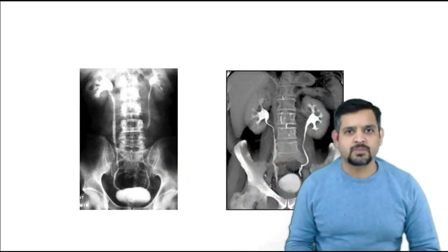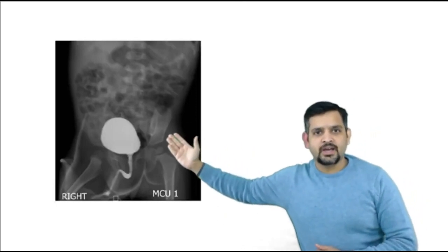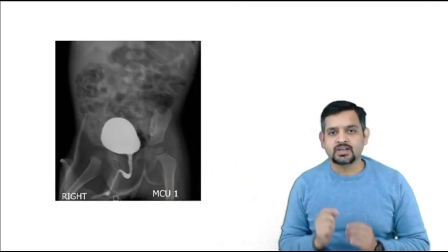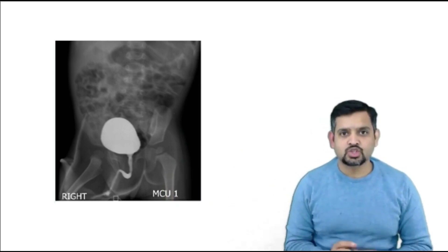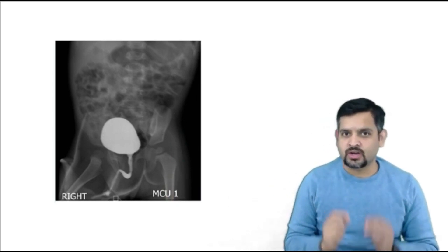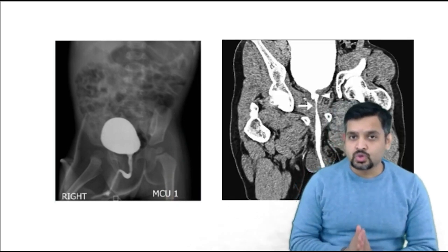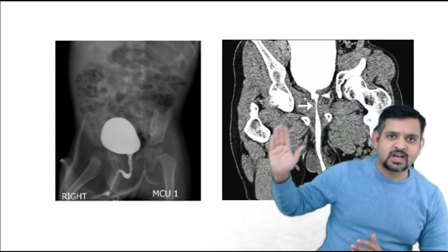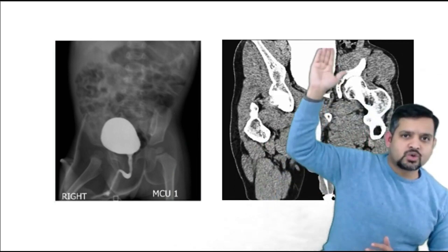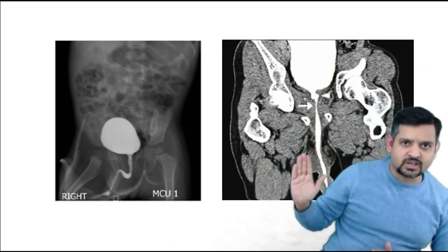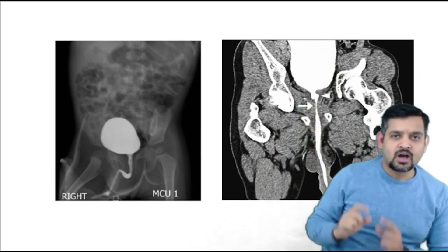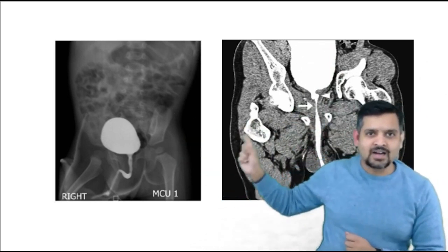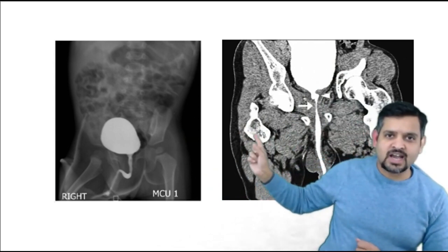If you see the dye going into the bladder and urethra, you are dealing with a case of micturating cystourethrography (MCU). You can also perform MCU using a CT scan, where you can see the dye going into the bladder and traversing through the urethra. Note the background — a conventional radiograph versus a CT MCU.